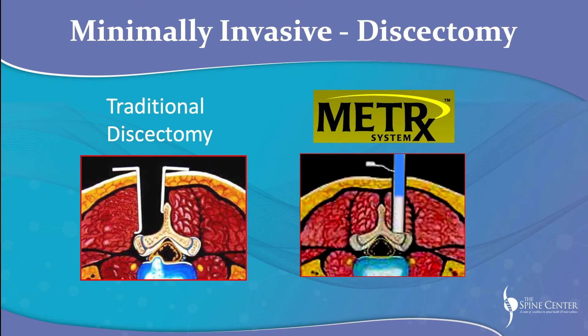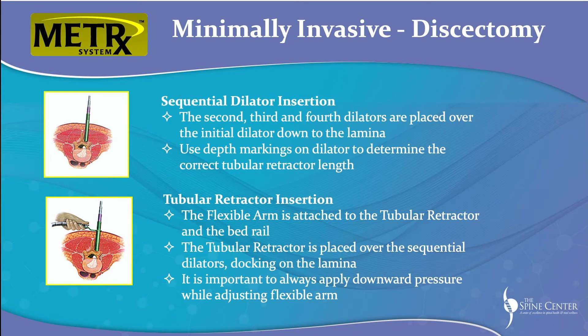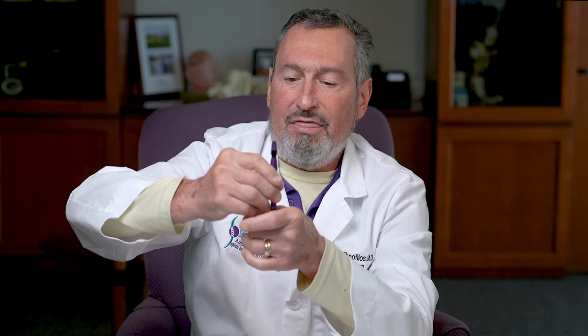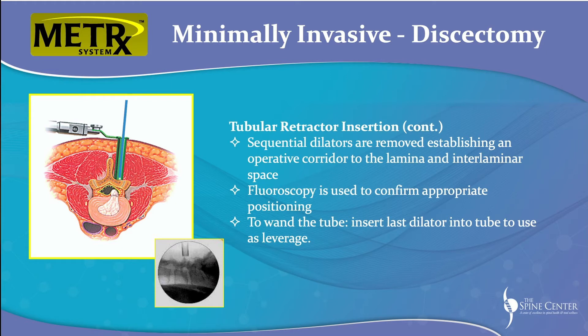We're going to talk about two different types of minimally invasive back surgery. The first is the microdiscectomy. The right side shows how we perform a microdiscectomy with muscle-sparing approaches using tubes, while the left shows how muscle is stripped off for open surgery. With minimally invasive, under x-ray guidance we place a wire to where we want to go, then perform progressive dilation — we go between the muscle fibers, placing progressively larger dilators to create our exposure while leaving all muscles attached to the spine.